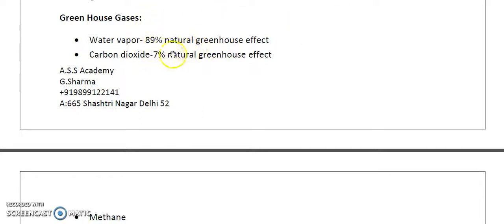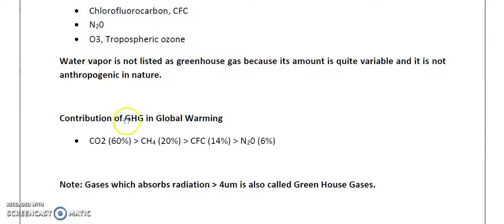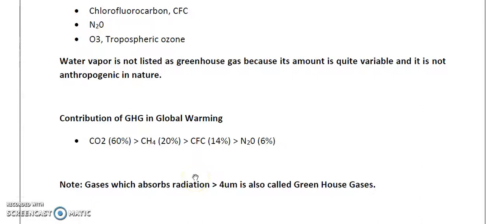Coming to the contribution of greenhouse gases to global warming: CO2 ranks first with 60 percent contribution, followed by methane at 20 percent, followed by chlorofluorocarbon (CFC) at 14 percent, and lastly N2O at six percent. We should keep this order and these percentages in mind.